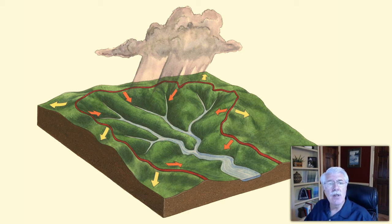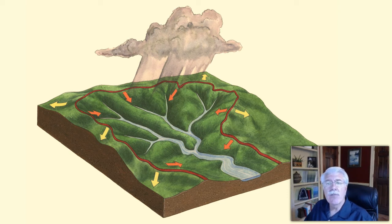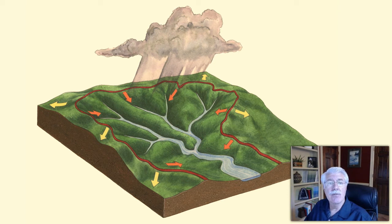A watershed is all the land from which water drains into a specific body of water. Sections of connected hills and valleys form each watershed. Small watersheds make up larger watersheds. Everyone lives in a watershed, and all land on Earth is part of some watershed.